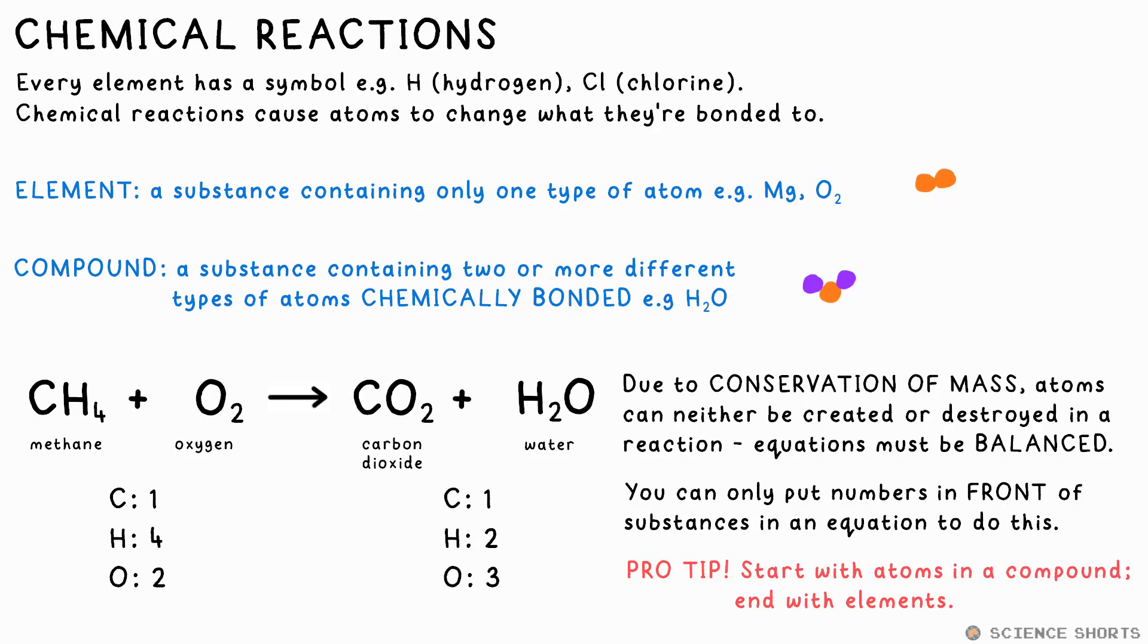So with this one, let's go with the carbons first. There's one on the left, one on the right, so that's all good. Hydrogens however, there are four on the left, only two on the right. Now we can't change the small numbers because that would change what the compound is. So all we can do is put numbers in front of elements or compounds to multiply them up. Stick a two in front of the H2O, we now have two times two hydrogens, so that's four on the right as well.